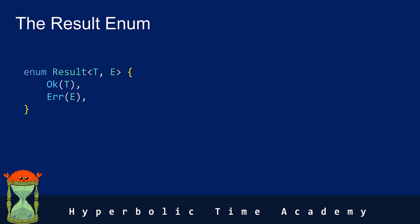As you can see here, the result enum is quite straightforward and has two variants: OK and Error. If everything goes as planned, we return the OK variant, but if something goes wrong, we return Error. The T and the E are generic type parameters, each representing the type of value to be returned. If you're not familiar with generics, there is a link to a video in the description that explains it all.